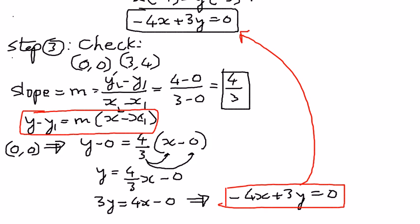There are multiple ways of arriving at the same answer. In this particular case, we used determinants to find the equation of the straight line, and we verified it using known methods from algebra. In my next presentation, we shall look at some more examples related to solving problems using determinants.